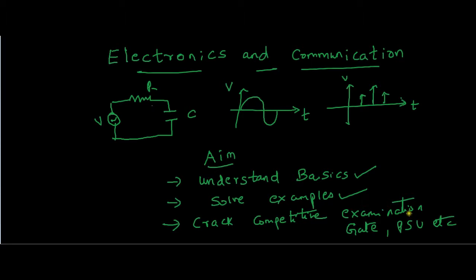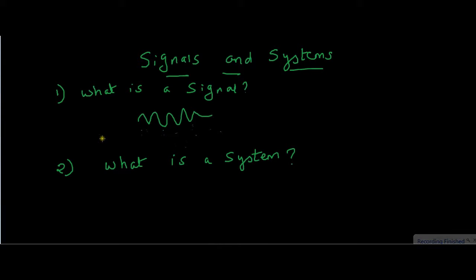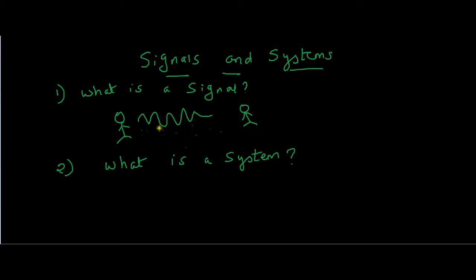Let's get started with signals and systems. A signal is anything which carries information. Suppose if you are standing at the bus stop and you ask the guy next to you what time is the bus — that question travels through the air and this is called a signal. It contains your information: what time is the bus. So that is the simple definition.